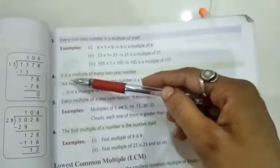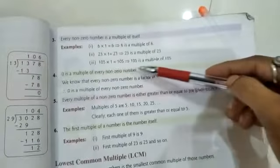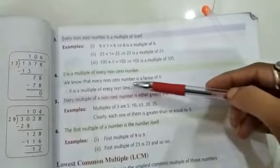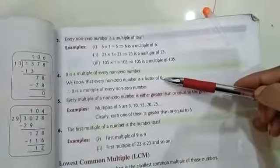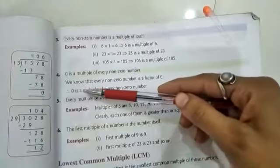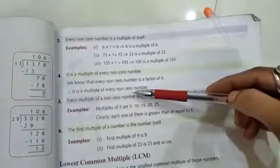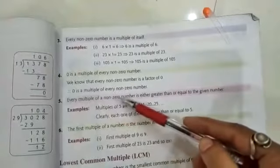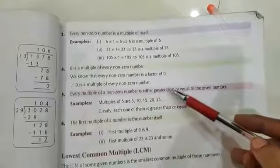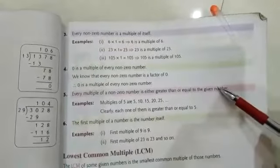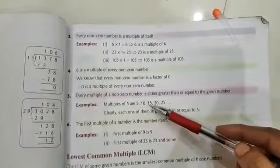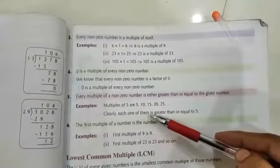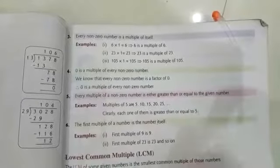Fourth is, 0 is a multiple of every non-zero number. We know that every non-zero number is a factor of 0. Fifth property is every multiple of a non-zero number is either greater than or equal to the given number. Multiples of 5 are 5, 10, 15, 20, 25. Clearly each one of them is greater than or equal to 5.